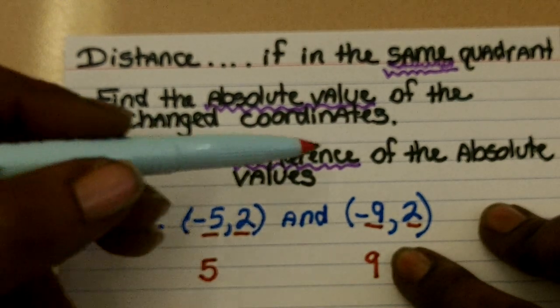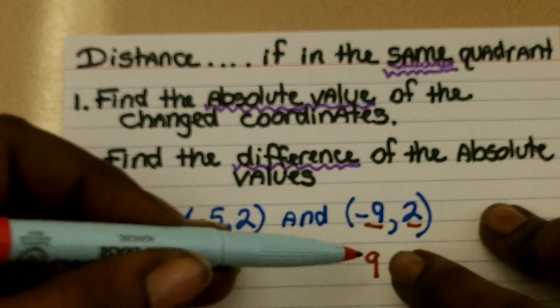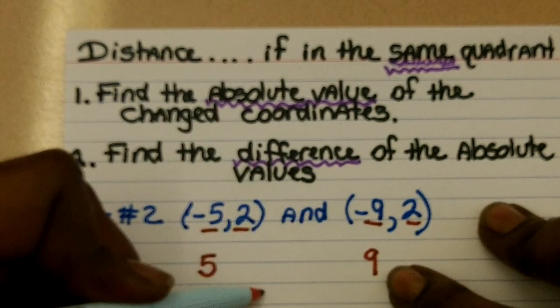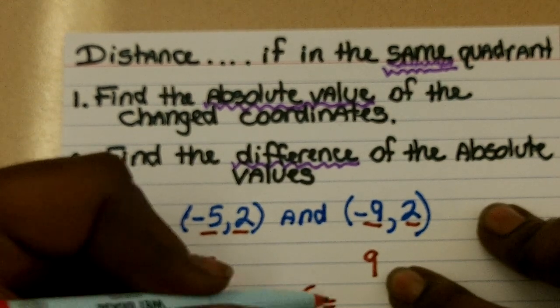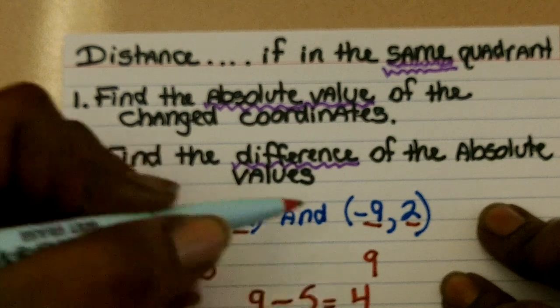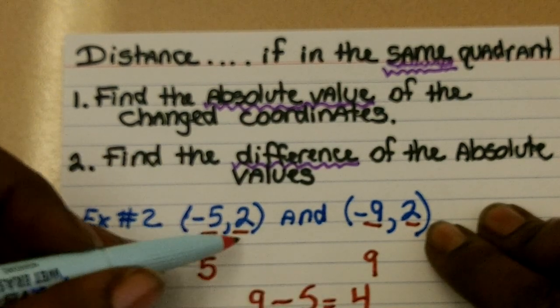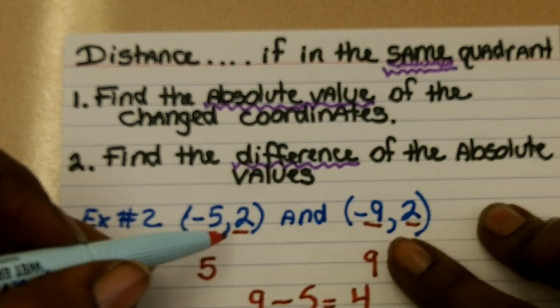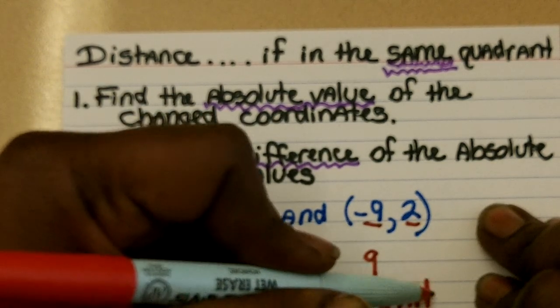Step two is to then find the difference between the absolute values. So in other words, we're going to take the larger number, which is 9, and subtract the smaller number, which is 5, to get a difference of 4. Therefore, the line that goes through ordered pair (-5, 2) and ordered pair (-9, 2) would be 4 units long.